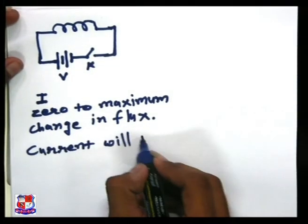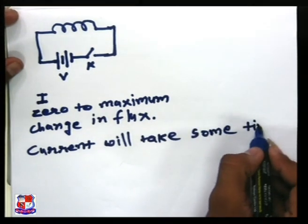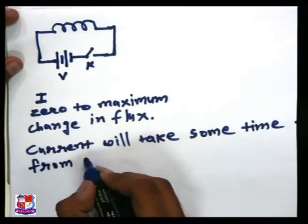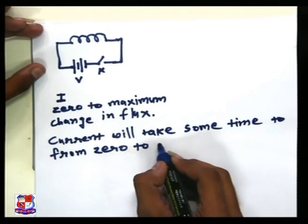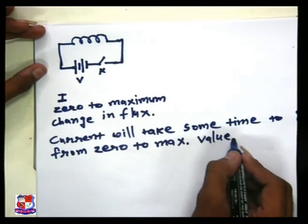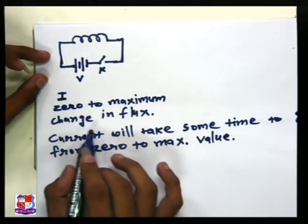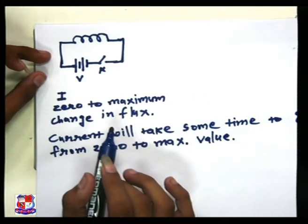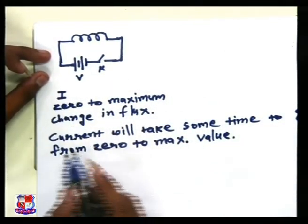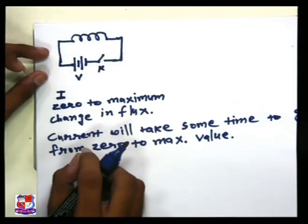The current will take some time to go from zero to its maximum value. This illustrates Lenz's law — if the flux is changing in the circuit and the current is trying to go from zero to maximum, it will not do so instantaneously. Similarly, if we open the switch, the current will go from maximum to zero, but again it will take some time. This is the effect of self-induction.